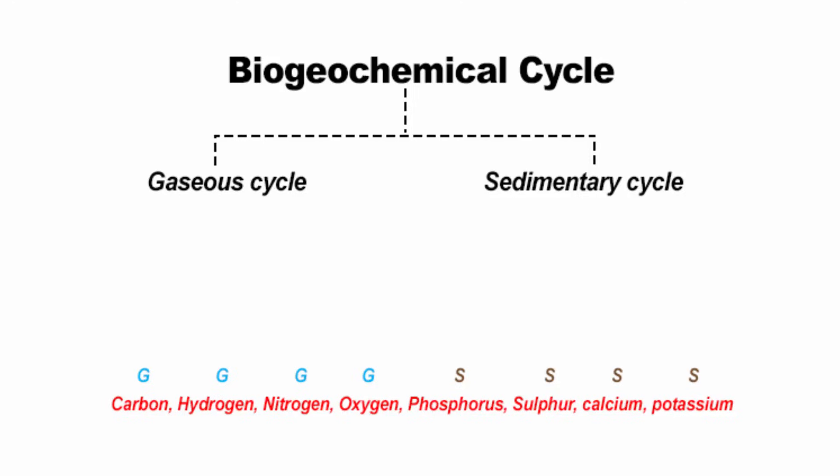In the gaseous cycle, the elements are in gaseous form. But some combinations, such as hydrogen and oxygen, go on to become water — meaning the gaseous cycle has both a gaseous phase as well as a water phase. Evaporation converts water into water vapor, from liquid to gaseous state. So the life-forming chemical materials that go back into the environment from water to gaseous form do so through the gaseous cycle. Likewise, in the sedimentary cycle, the main components are soil and rocks, which are basically part of earth's crust. All the life-forming chemical materials that go back into the environment from soil and rocks do so through the sedimentary cycle.